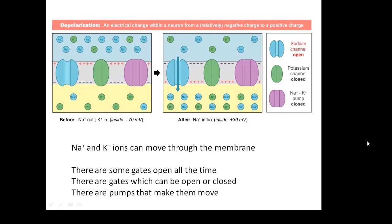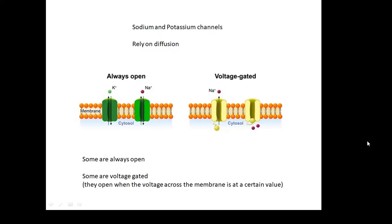Sodium and potassium ions can move through the membrane. Some of the gates are open all the time, so they just move by diffusion — from a higher to a lower concentration. Some of the gates can be open or closed; we say that they are voltage gated. If the voltage reaches a certain value, then the gates open. And there are pumps. Sodium and potassium channels rely on diffusion — movement from a high concentration to a low concentration. Some of them are always open and some of them are voltage gated.